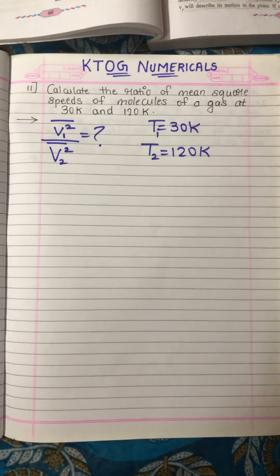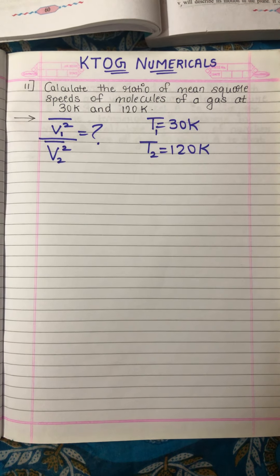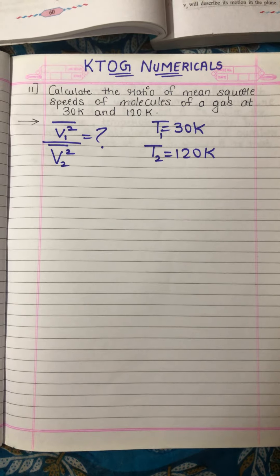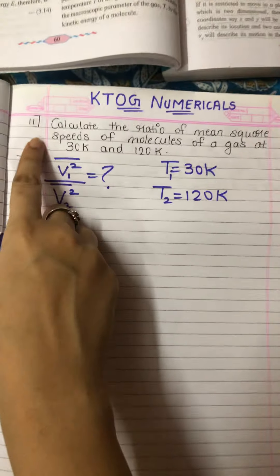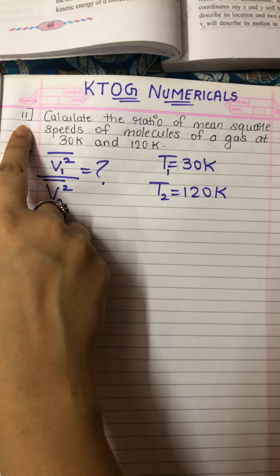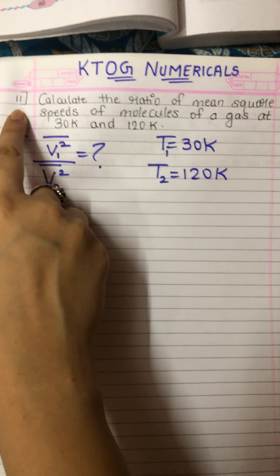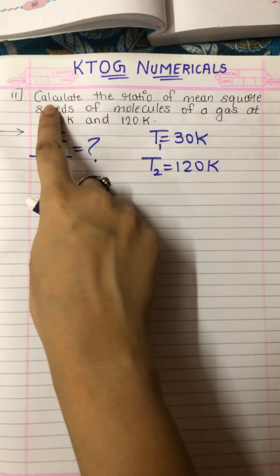Let's start with the numericals of the next chapter, that is kinetic theory of gases, starting with question number 11 of your textbook unsolved numericals.